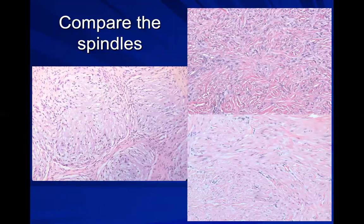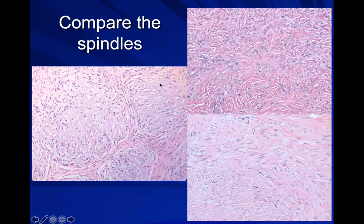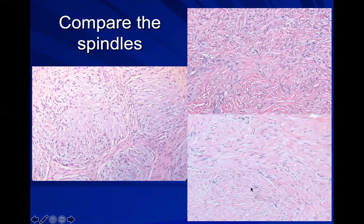As a review of all the spindle cells: neural spindles have wavy cytoplasm with tapered-ended nuclei. Fibroblasts have more red, slightly firmer cytoplasm that is collagen, also taper-ended. Muscle has blunt-ended nuclei and little white clearings — the glycogen — which helps identify smooth muscle.